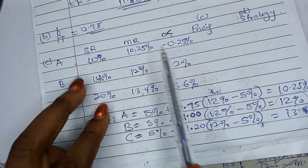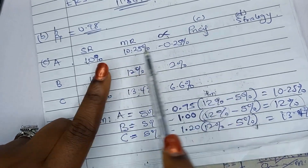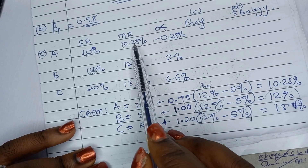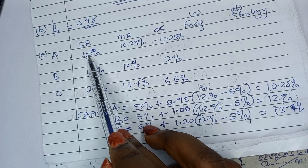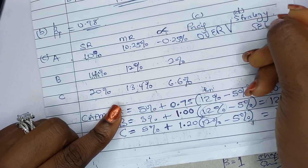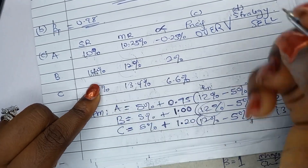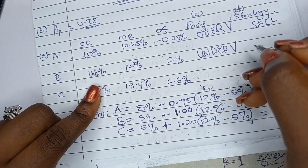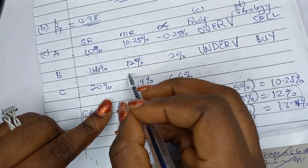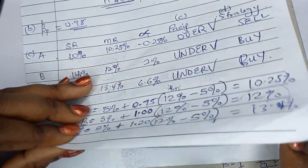For the pricing decisions: Security A — the market said 10.25% but it only made 10%, so the market has overvalued A. Security B — the market said 12% but it made 14%, so the market undervalued B — buy more. Security C — the market predicted 13.4% but it made 20%, so the market undervalued C — buy more.